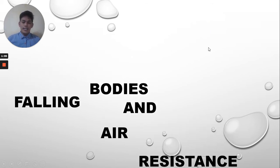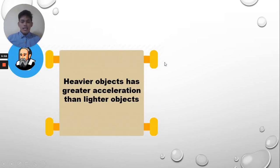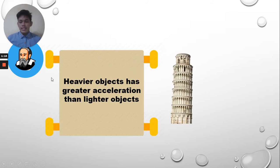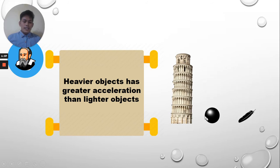Before the experiment of Galileo Galilei at the Tower of Pisa, it was generally believed that heavier objects have greater acceleration than lighter objects. He examined the movement of two objects: a cannonball and a feather. He released the two objects from the top of the tower, and as you can see, the cannonball reaches the bottom or the ground first before the feather.